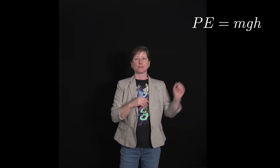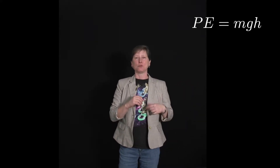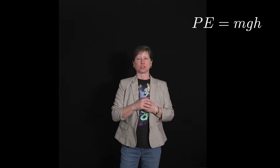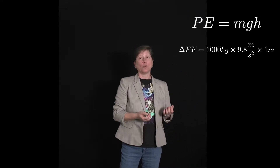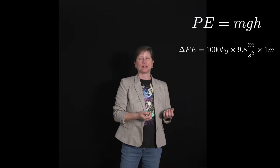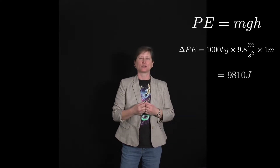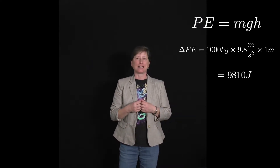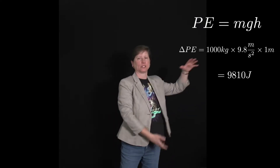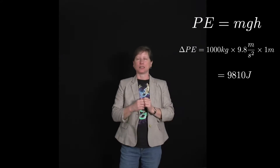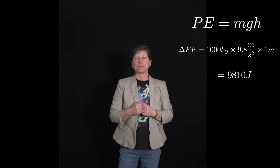As you recall, gravitational potential energy near the surface is just MGH. For example, to lift a thousand kilogram car one meter at the surface of Earth, you'd have to exert 9810 newtons of force over that meter, doing 9810 joules of work.